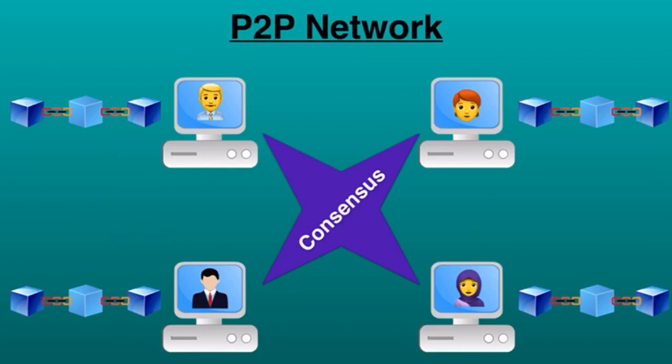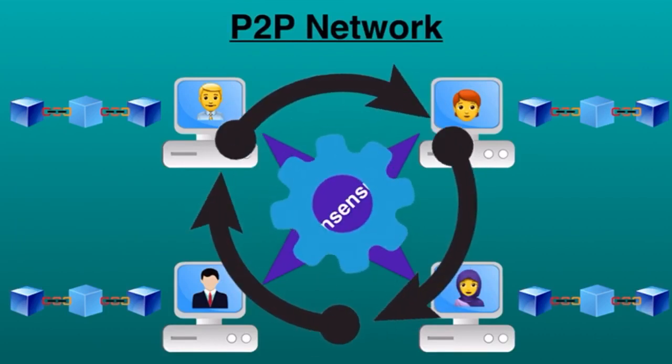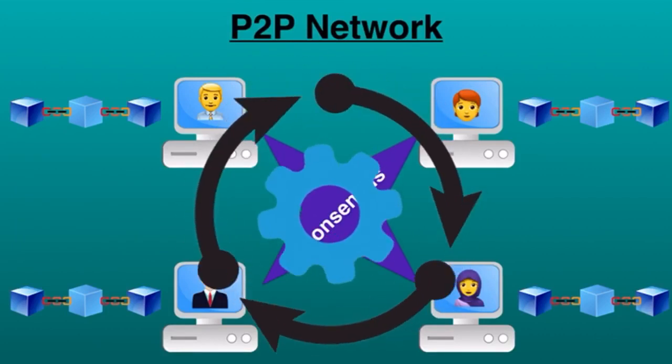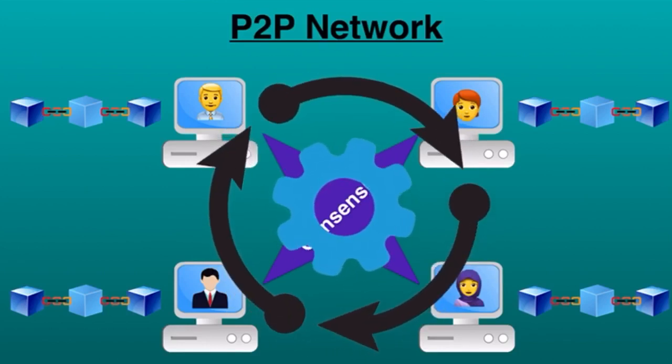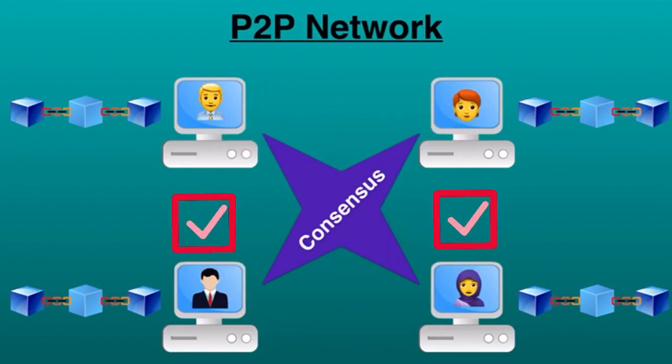And if you want to tamper with one block or add a tampered block in the blockchain, you will need to recalculate the proof of work for all the following blocks and take control of more than 50% of the entire network. Only then your tampered block will be approved and accepted by everyone in the network. This is almost impossible to do because there are millions of blocks on the blockchain.